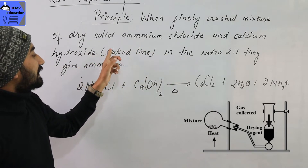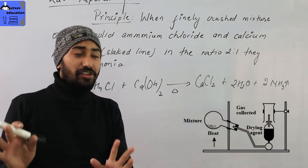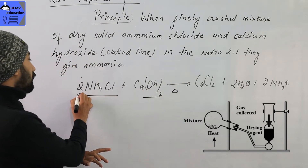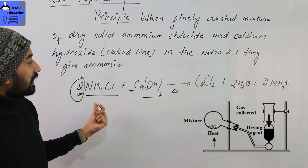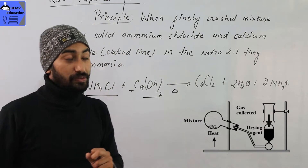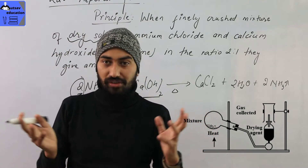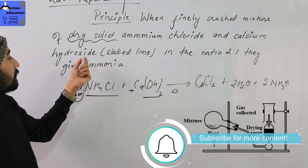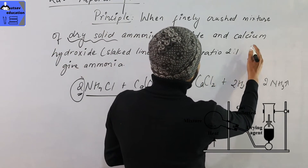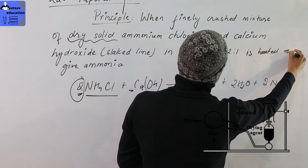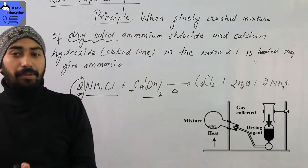When a finely mixed dry solid mixture of ammonium chloride and calcium hydroxide in the ratio 2:1 is heated, it gives calcium chloride plus water plus ammonia. The ratio is 2 moles of ammonium chloride to 1 mole of calcium hydroxide.